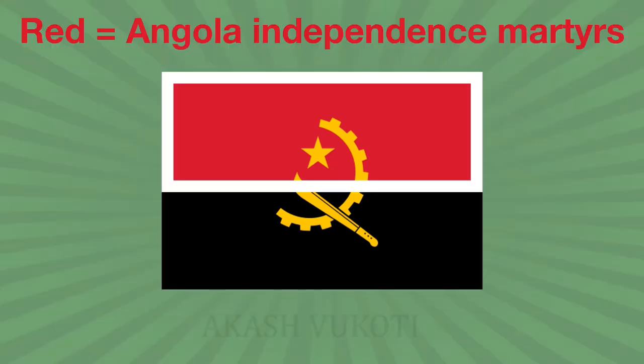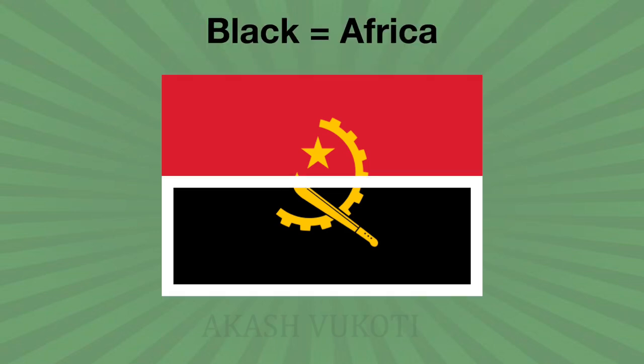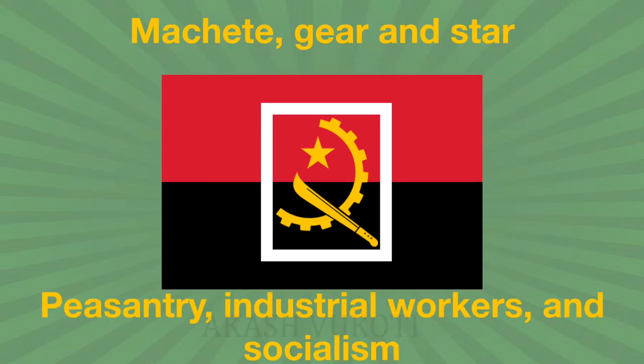Red represents liberty and black represents the African continent. The half cogwheel, machete, and star symbols mean workers, peasants and socialism.